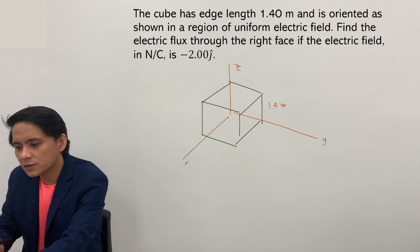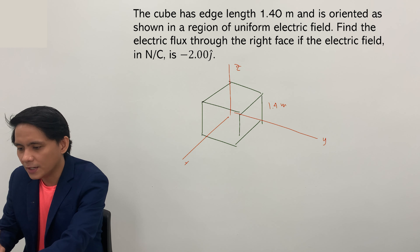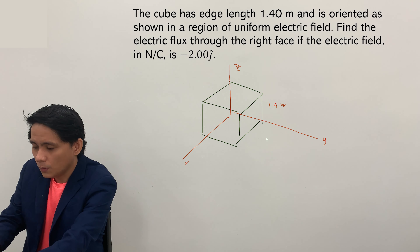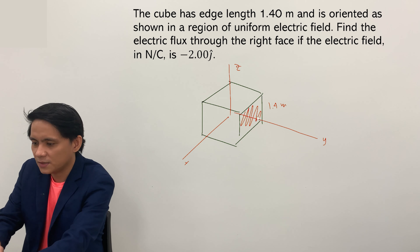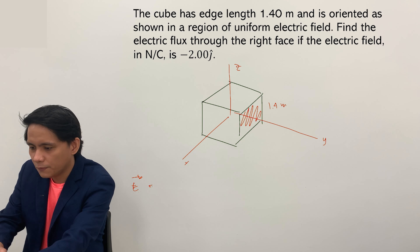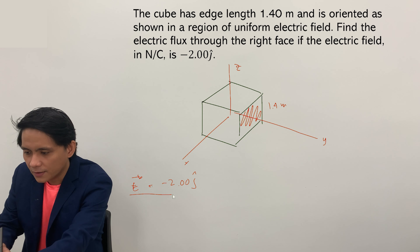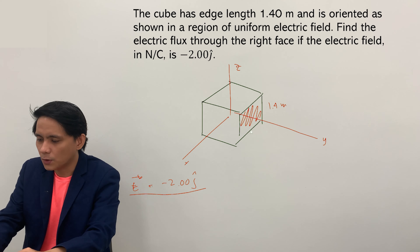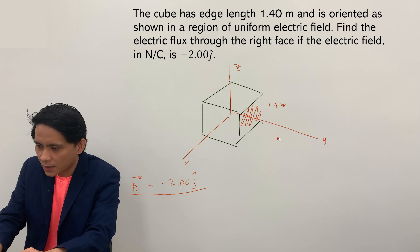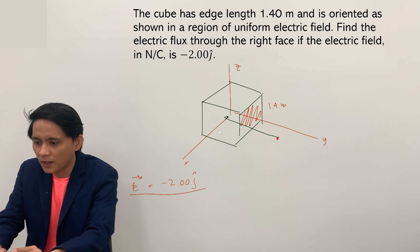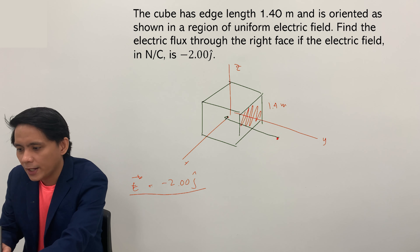Find the electric flux through the right face if the electric field in newtons per coulomb is given by negative 2j hat. We are going to solve the electric flux that goes through this surface with an electric field of negative 2j hat. Since the unit vector is j hat, the direction is the negative y direction.